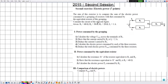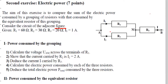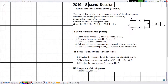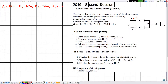Consider the circuit of the adjacent figure. Given that R1 is equal to 60 ohms, R2 is equal to 30 ohms, R3 is equal to 20 ohms, and I1 is equal to 1 ampere. The trick in solving such exercises is to write the traverse current and the applied voltage on the given electric circuit or diagram. The value of I1 is given as 1 ampere.